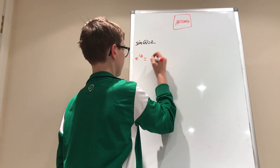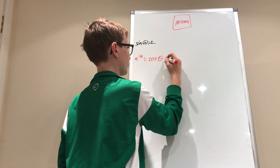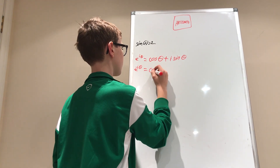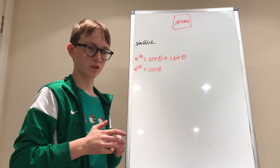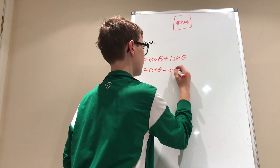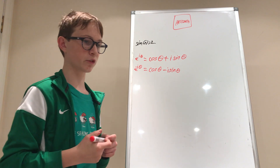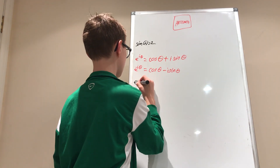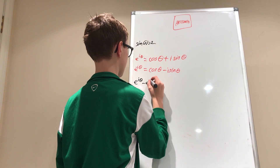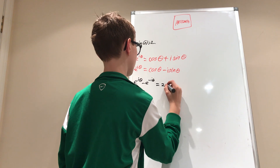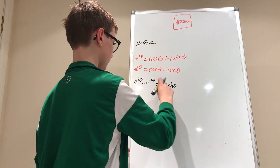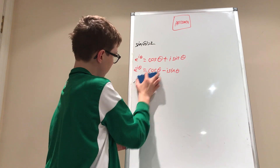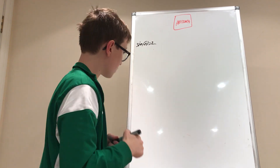So we start with Euler's formula: e^(iθ) = cosθ + i sinθ. Then e^(−iθ) = cosθ − i sinθ, because cosine is even and sine is odd. To isolate sine, we subtract them: e^(iθ) − e^(−iθ) = 2i sinθ. Dividing both sides by 2i gives us sin(θ) = (e^(iθ) − e^(−iθ)) / 2i.